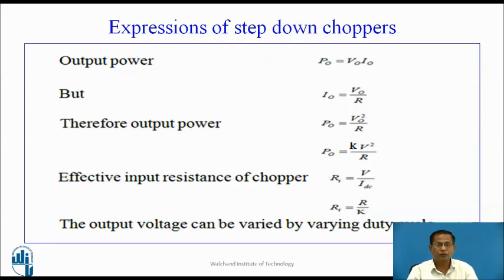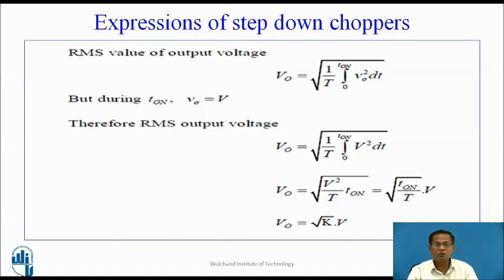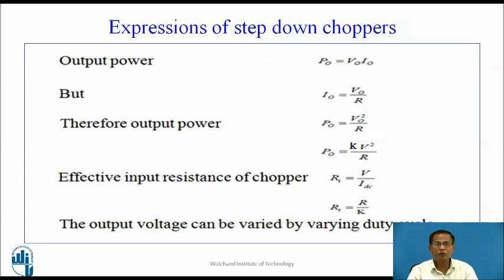Expression for output power: P_0 = V_0 × I_0. Since I_0 = V_0/R, output power P_0 = V_0²/R = K × V²/R. Effective input resistance of the chopper: R_i = V/I_dc. Since I_dc = V_dc/R and V_dc = K × V, we get R_i = R/K. The output voltage can be varied by varying the duty cycle.